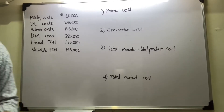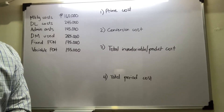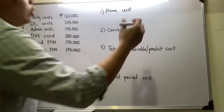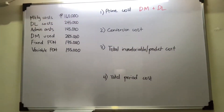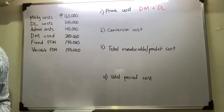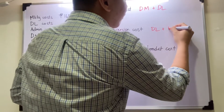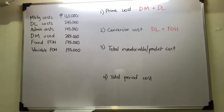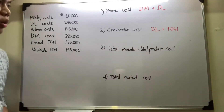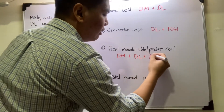Let's first determine what is the equation for prime cost. The equation for prime cost is direct materials plus direct labor. For conversion cost, the equation is direct labor plus factory overhead. Factory overhead is already inclusive of your fixed and variable overhead. Total inventory or product cost would be direct materials plus direct labor plus factory overhead.